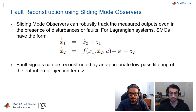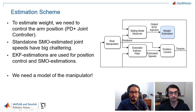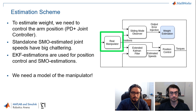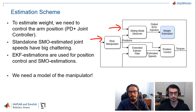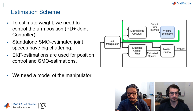For anyone interested in the detailed approach Marco has taken, the formal paper and files to reproduce the work will be linked in the video description. The estimation scheme proposed is formed of five blocks. The first is the system itself — we assume the manipulator only measures joint positions, since that is the most common sensor available. The input signals are the torques sent to the joints, and with these signals we design the sliding mode observer.